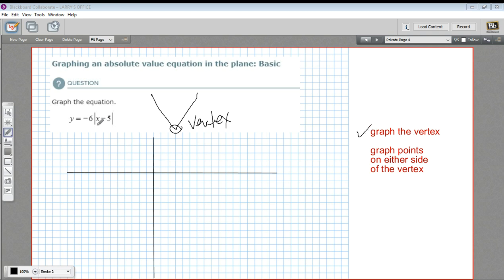And that happens where this stuff inside the absolute value symbol equals 0. So if we're going to make a chart of x and y values, the first x value I want here is where this x minus 5 equals 0. So what can I put in for x to make this equal to 0? You might be able to see right away that if you put in a positive 5, 5 minus 5 would be 0. So this value is going to be 5.